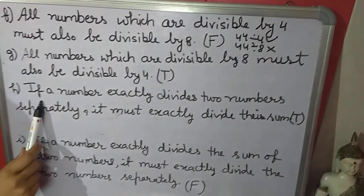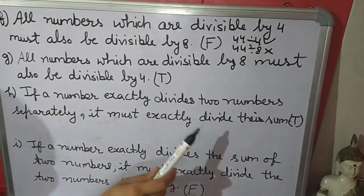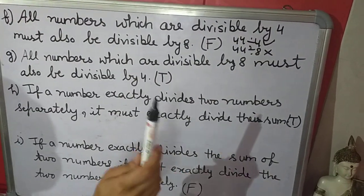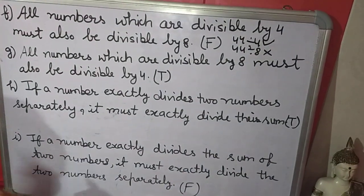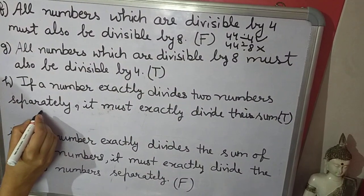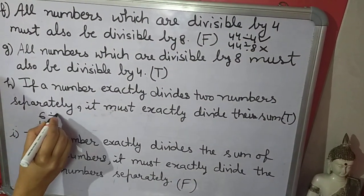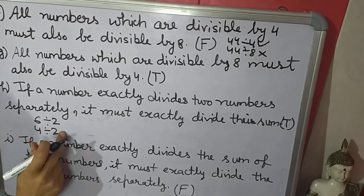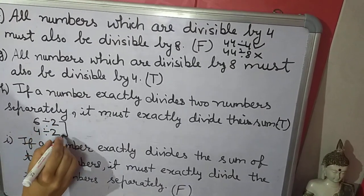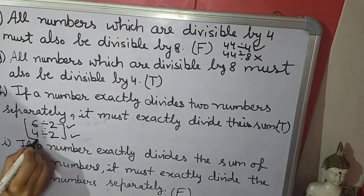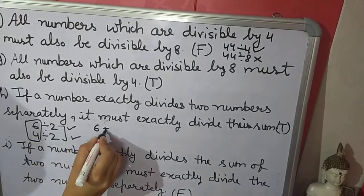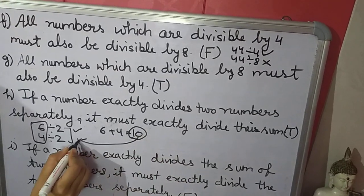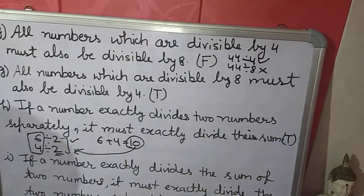Next — if a number exactly divides two numbers separately, it must exactly divide their sum. If we take 6 and 4, both numbers are divisible by 2. If we add these numbers: 6 plus 4 equals 10, and 10 is also divisible by 2. So this statement is true.